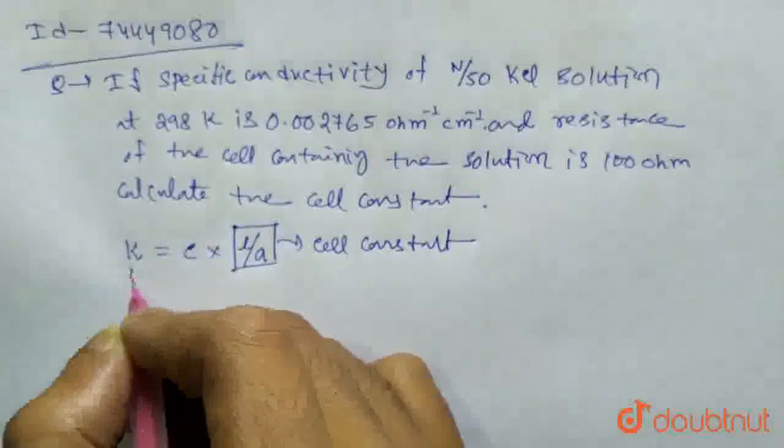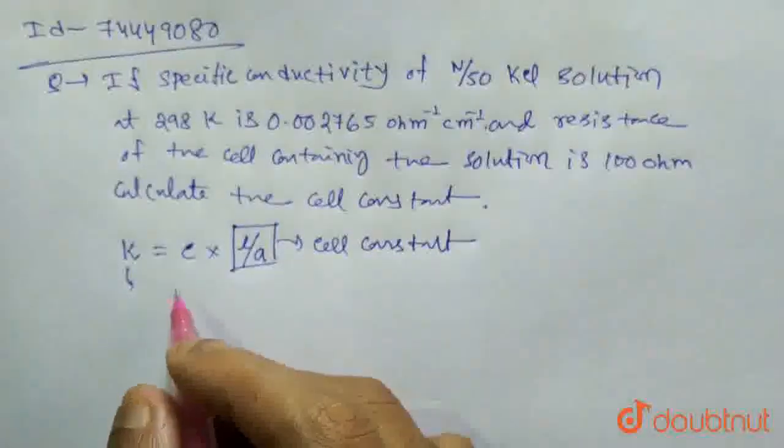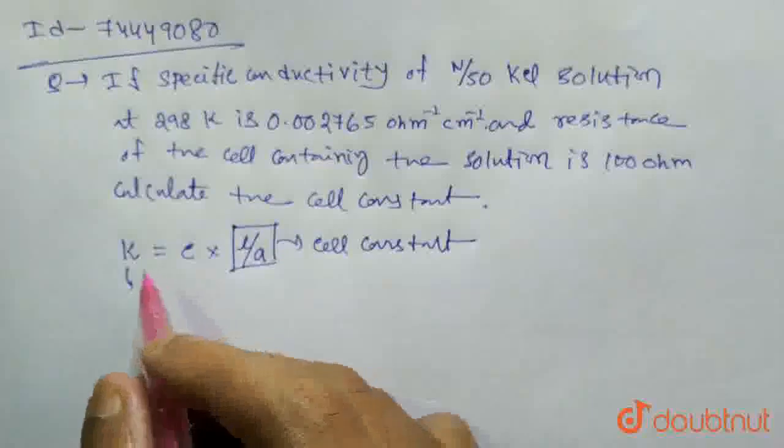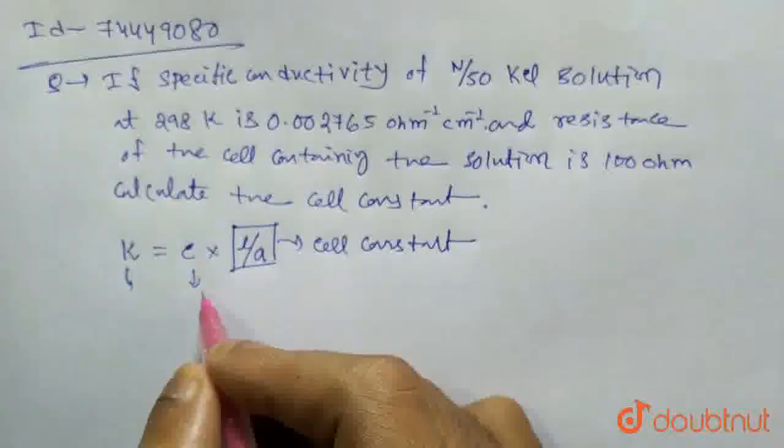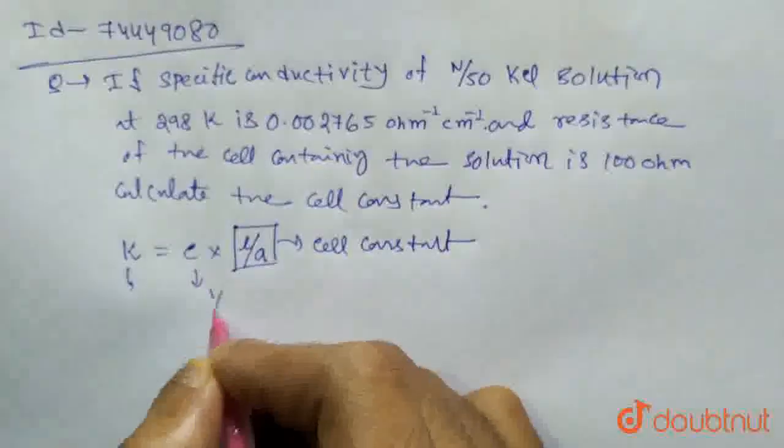Kappa is the specific conductance, which is given, and C is the conductance. Conductance equals 1 by R.